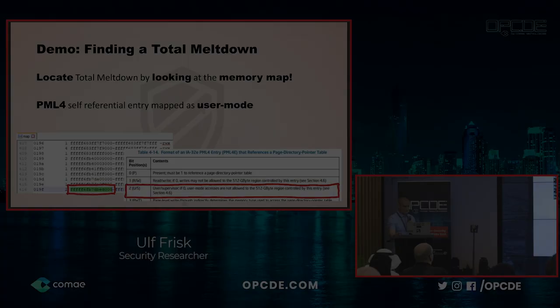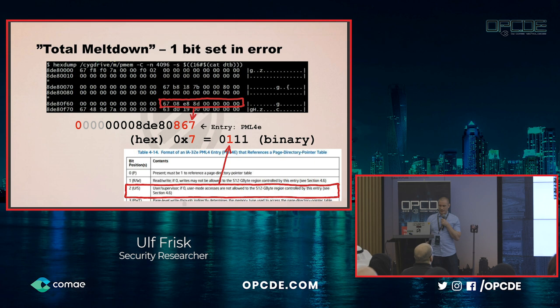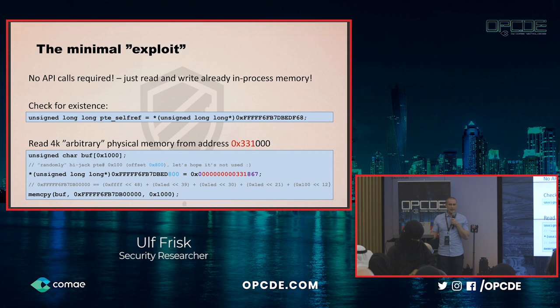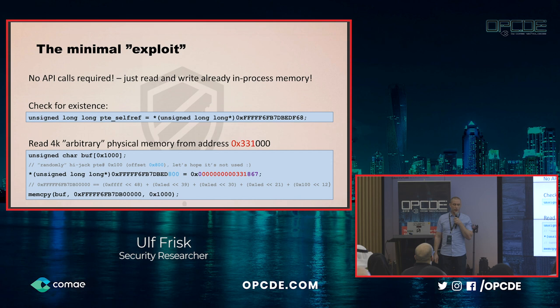The Total Meltdown vulnerability was really one single bit set in error. If you read the Intel manual, it clearly states that user/supervisor — if 0, user mode accesses are not allowed to this memory region. It was set to 1, so user mode accesses were allowed. Exploitation was so easy I don't even want to call it an exploit — just inserting a fake page table entry at a fixed address in already-mapped process virtual memory allowed arbitrary physical memory reads and writes.